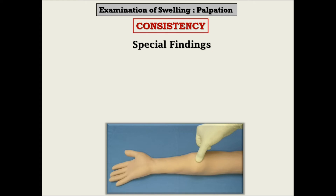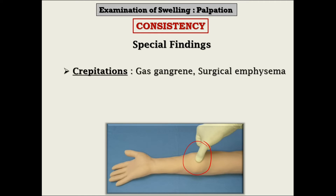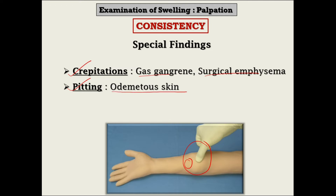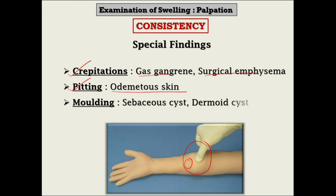When you press any swelling, you may get special features. If you get crepitations, it is suggestive of either gas gangrene or surgical emphysema. If you find pitting where you pressed, it is because of edematous skin, usually due to some inflammation. In one category, the contents are so thick — like in sebaceous cyst or dermoid cyst — that you can mold the swelling into different shapes, just like putty. This is called the putty sign or molding sign. These three features can be found when assessing consistency.